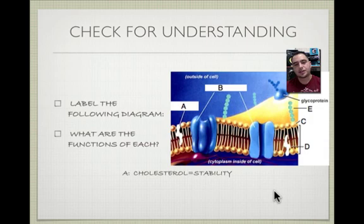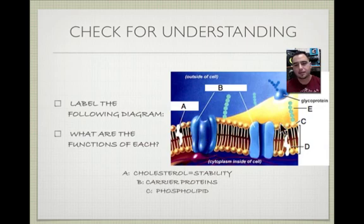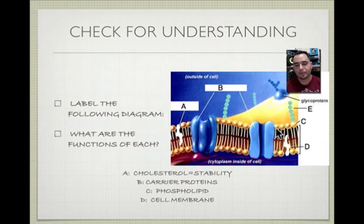The answers: A is the cholesterol molecule, which provides stability. B is a carrier protein that allows substances to go in and out. C is the phospholipid bilayer — the barrier that prevents some things from entering, allowing only small uncharged molecules through. D is the overall cell membrane that controls what goes in and out. E is the carbohydrates, which connect the cells.